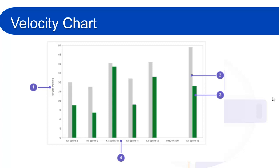The velocity chart is also board-specific, meaning it will only include the issues that match your board's saved filter. As I always mention in my previous videos, all reports in Jira Software are specific to the board's saved filter, so the results of the reports depend on your filters.